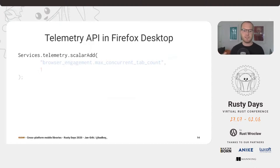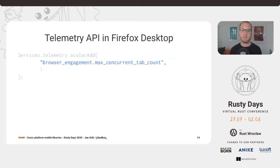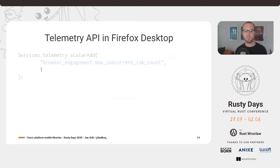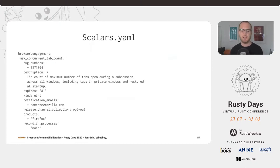The first thing you see is the function `scalarAdd` called on some global telemetry object. 'Scalar' is our naming for a single value that can be changed. You have a string used as the identifier for what we call the metric — the underlying data point we want to collect. In this case it's `browser.engagement.max_concurrent_tab_count`. The name to some extent already describes what this data should be, and then we increment it by one. There's actually one single source of truth in the Firefox codebase where this data is defined: `scalars.yml`. It holds the identifier and a lot more metadata about this metric, organized into category and names.